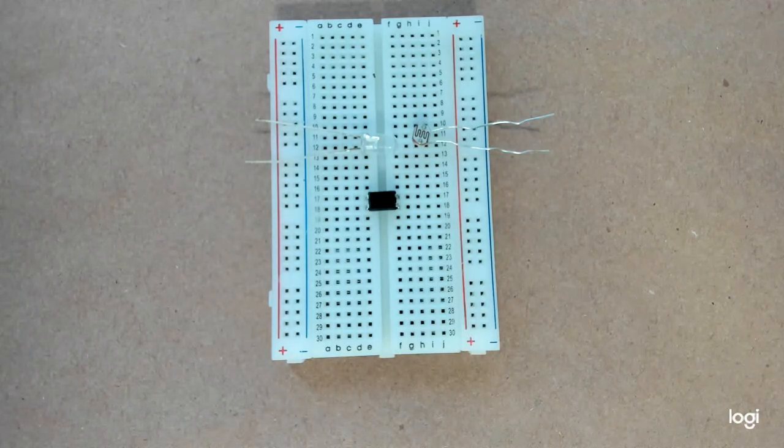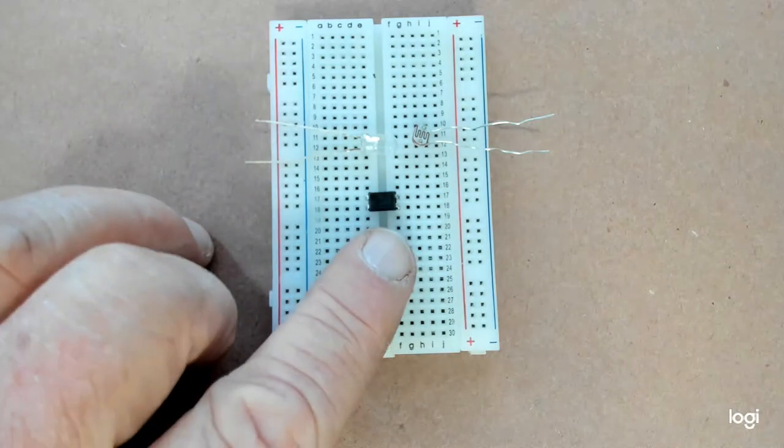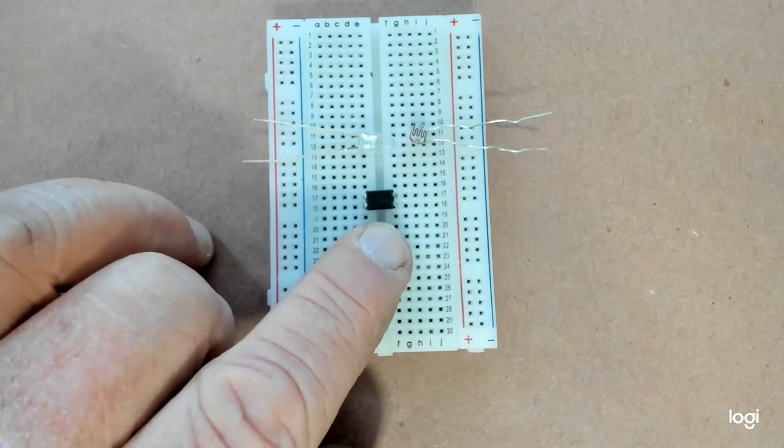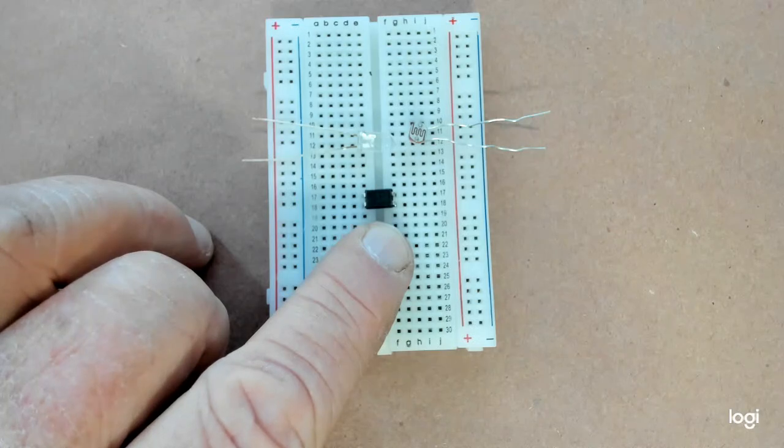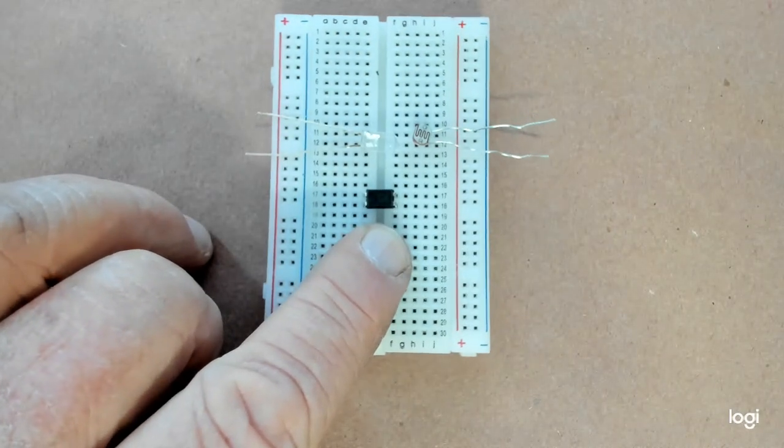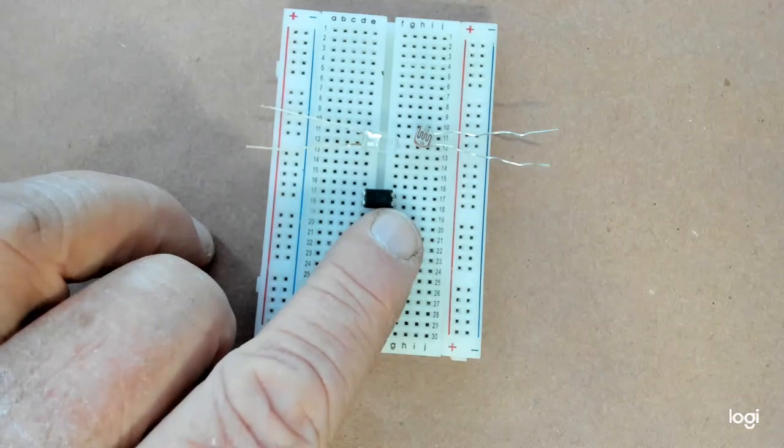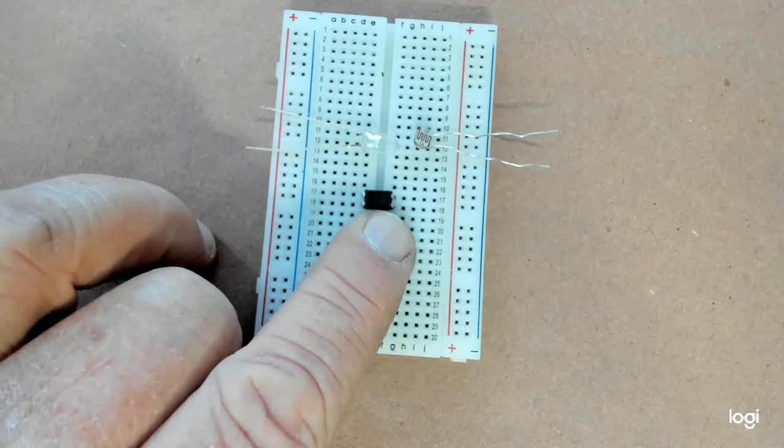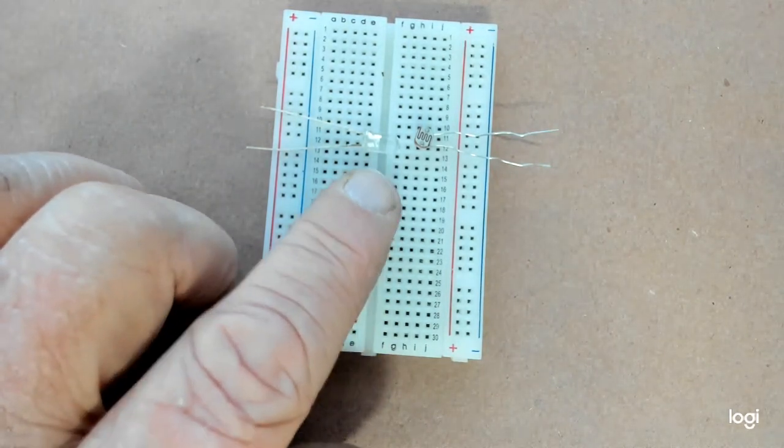Now, what an optocoupler does is it isolates circuits. They use these a lot in switch mode power supplies, RF circuits, anything that you want to isolate a problem, you would use an optocoupler.